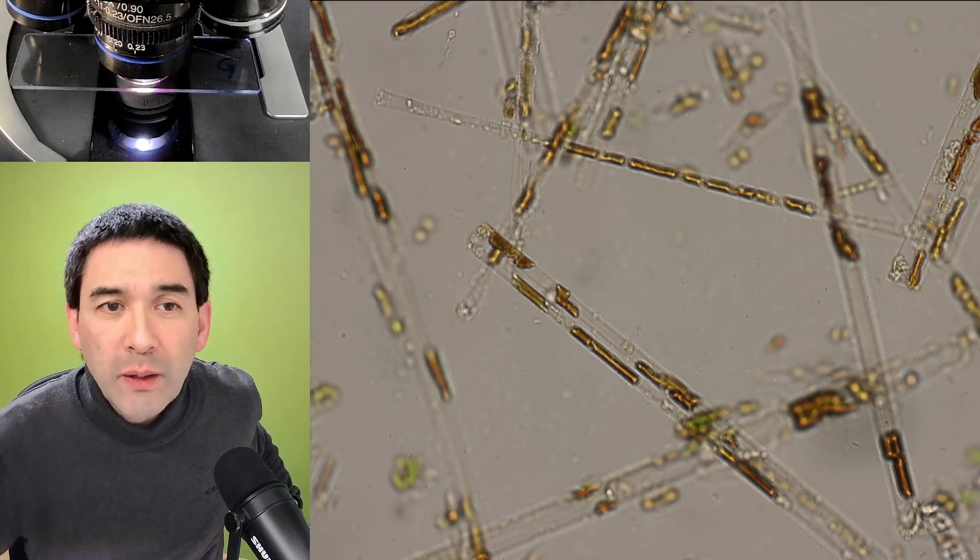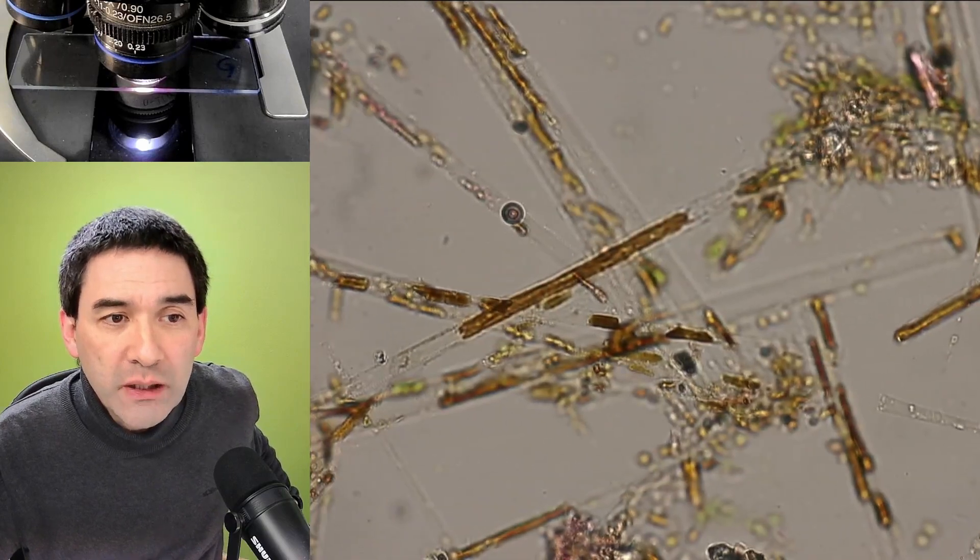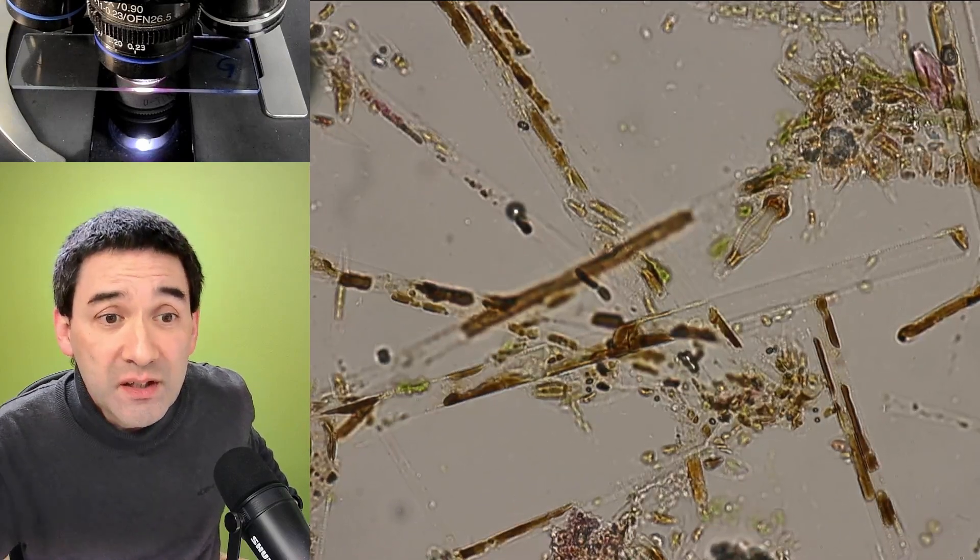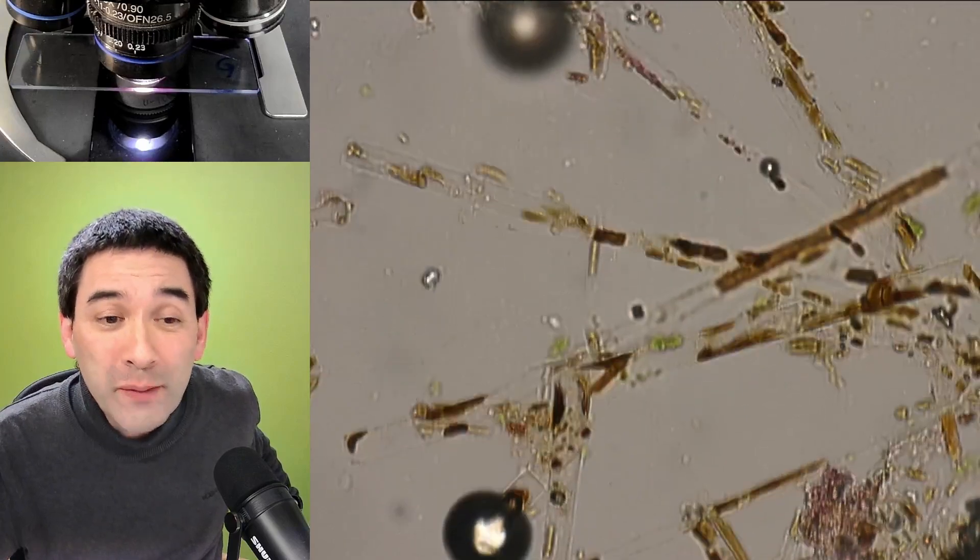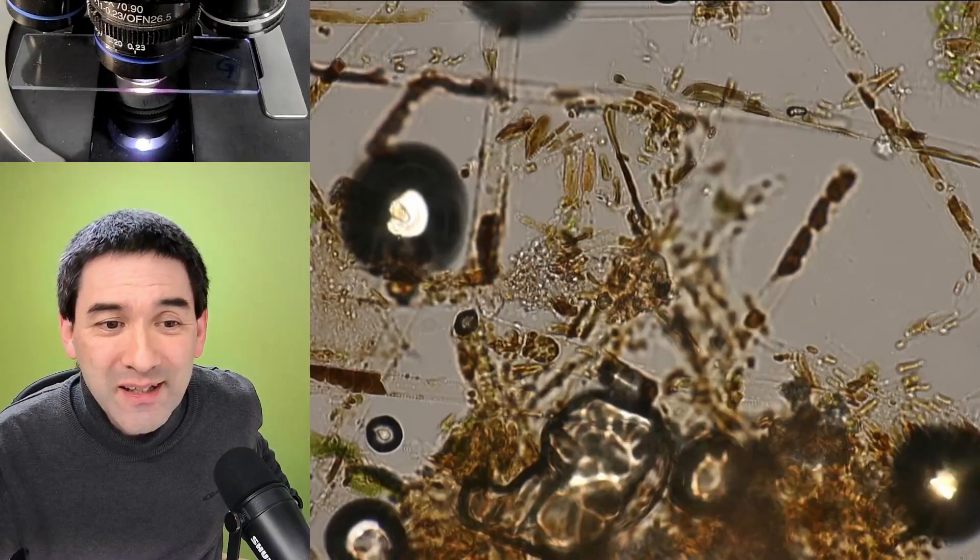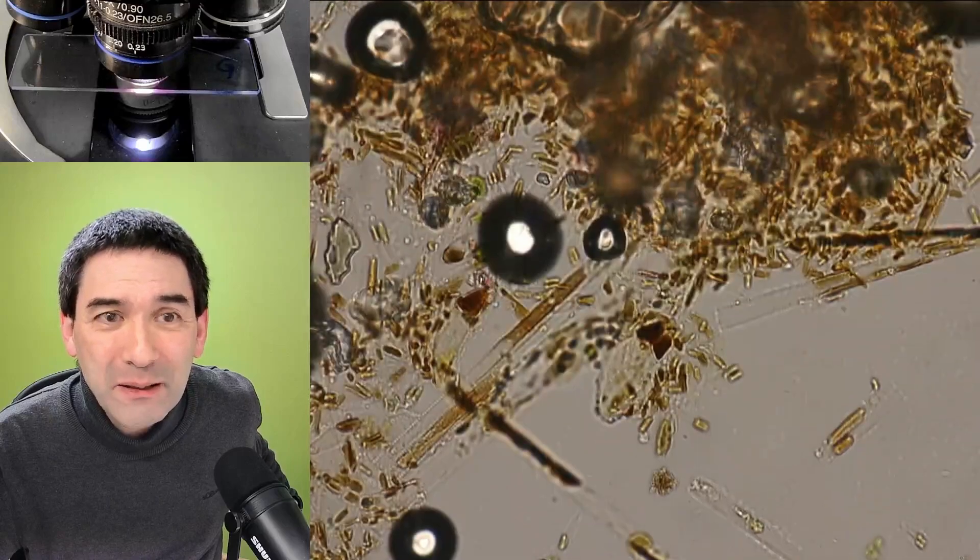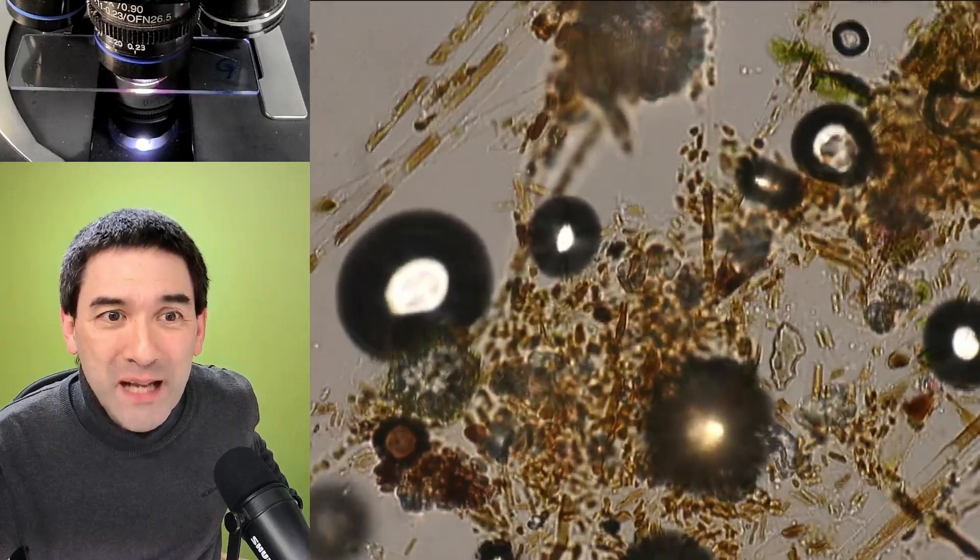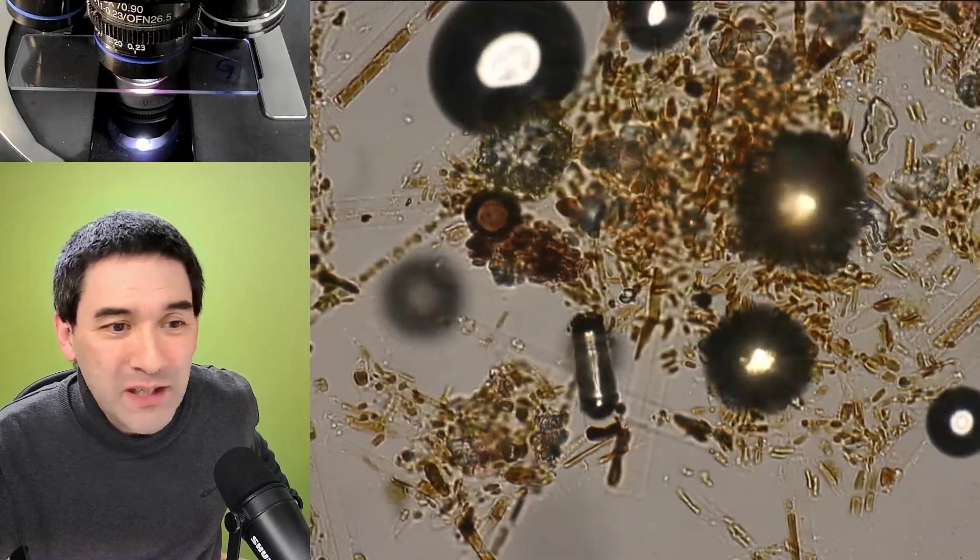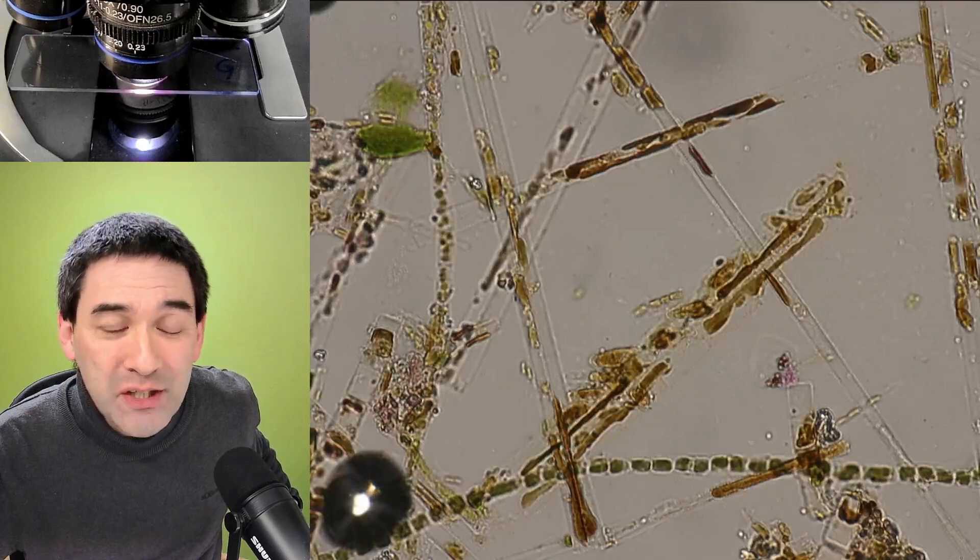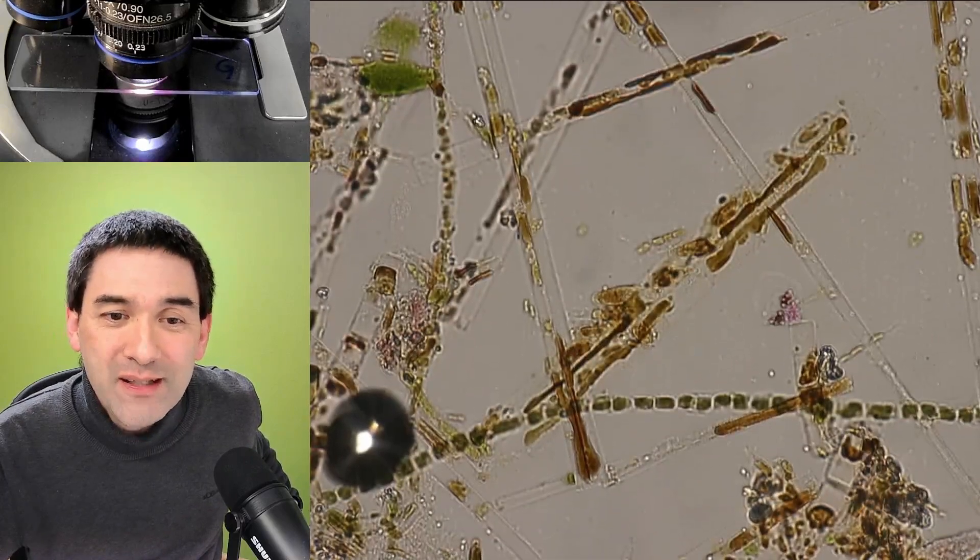The glycerin gelatin is able to preserve the specimen's characteristics reasonably well. Of course, no movement—I mean, it's a permanent slide. In that sense, we are missing a little bit on the natural appearance of a water sample where you have bacteria and other microorganisms swimming around, and also some of the gliding diatoms we're not able to see because everything is locked in place.